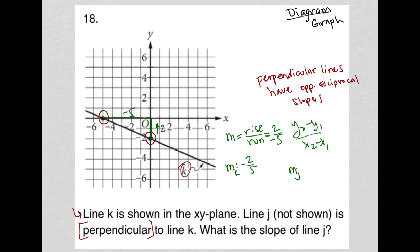My slope for line j is the opposite sign, so positive, and then reciprocal, so 5 over 2. So there's my answer to this question. 5 halves is the slope for line j.